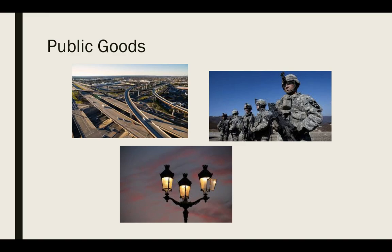A public good has two characteristics. The first one is it's non-excludable — we cannot exclude someone from using it. For example, roads and highways: anyone can use them, they're non-excludable, everybody has access to them. National defense: we cannot exclude someone from living in the United States; even if they don't pay any taxes, they still benefit from this public good. And street lighting: we can't exclude anyone from using that light — if anybody's walking down a street that has that light, we can't exclude them.